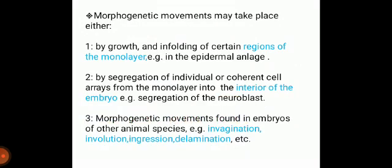Now the most important question is: how do morphogenetic movements arise? Morphogenetic movement takes place by growth and the unfolding of certain regions, by segregation, by invagination, by involution, by integration, or by delamination. During embryogenesis in Drosophila, we first see the migration of pole cells from the posterior end, and specific separate regions are formed: number one head, number two mouth part or the foregut, and the future tail is also formed on the posterior side.